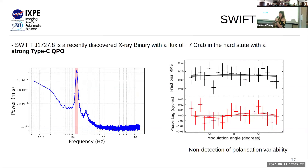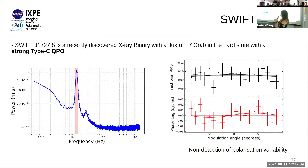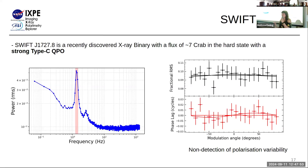Some of you may know about SWIFT J1727, a recently outbursting X-ray binary that was very bright at about 7 Crab last year. It shows a very strong type C QPO. Applying our method, unfortunately at this time I do not find a polarization QPO, but this does not rule out the Lense-Thirring precession model. Instead, it allows us to apply upper limits on what we expect from the model.